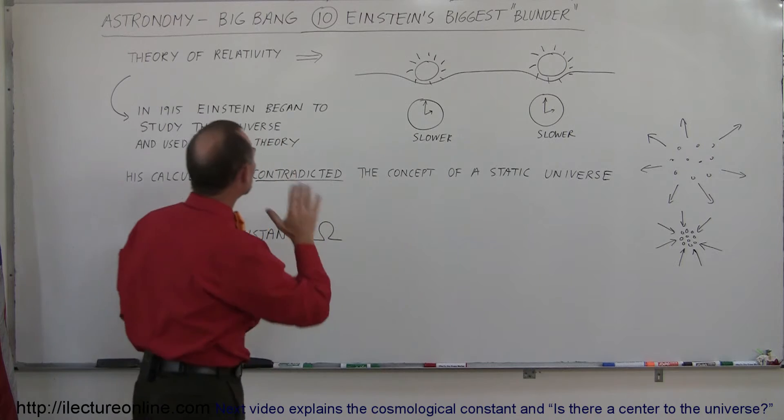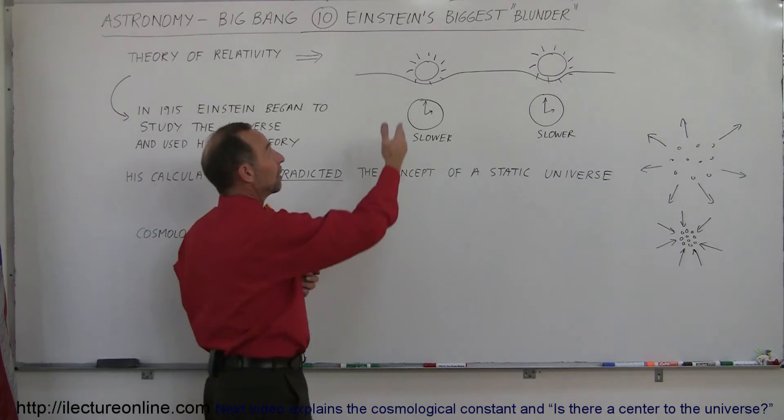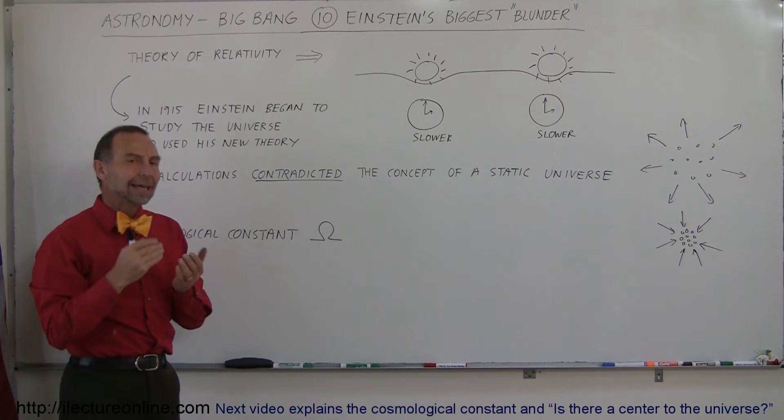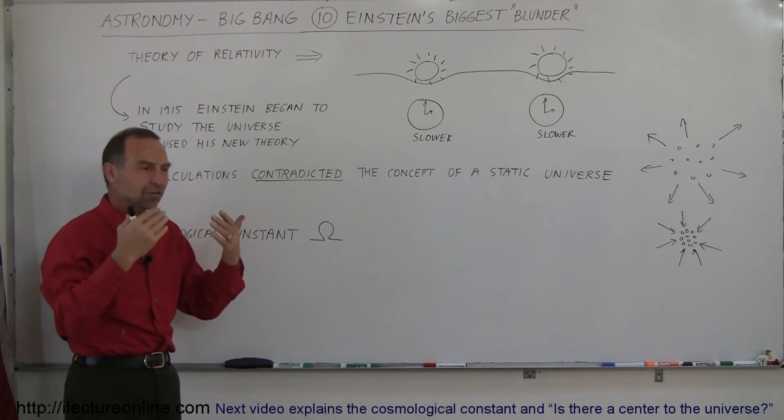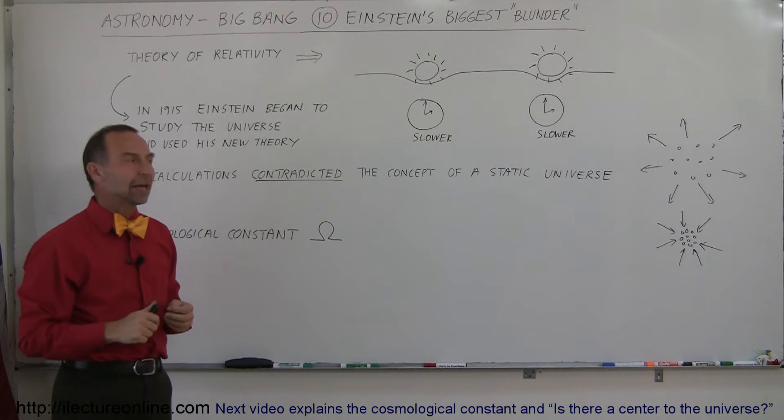So Einstein realized that space was not uniform, especially because of his theories of relativity, as far as gravity and time was concerned. But yet, he believed that the general concept that the universe was static, he believed that that was probably the case.